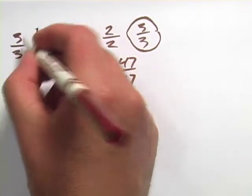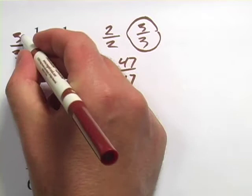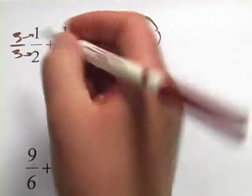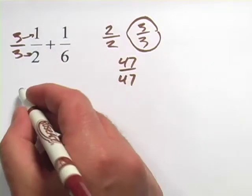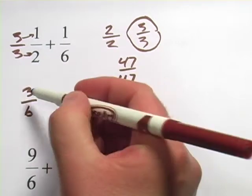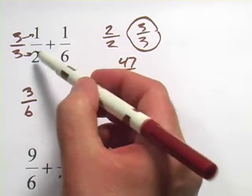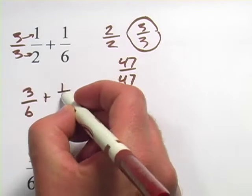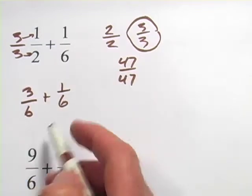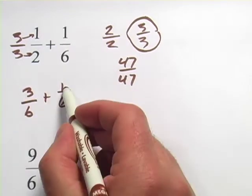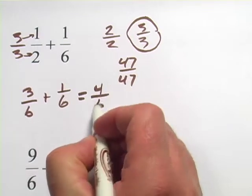When we multiply 1 half by 3 over 3, we multiply across the top, we multiply across the bottom. We get 3 times 1 is 3, and 3 times 2 is 6. Aha, so 3 sixths is the same thing as 1 half, but it's got a denominator of 6, so now we can add it. 3 sixths plus 1 sixth is 4 sixths.